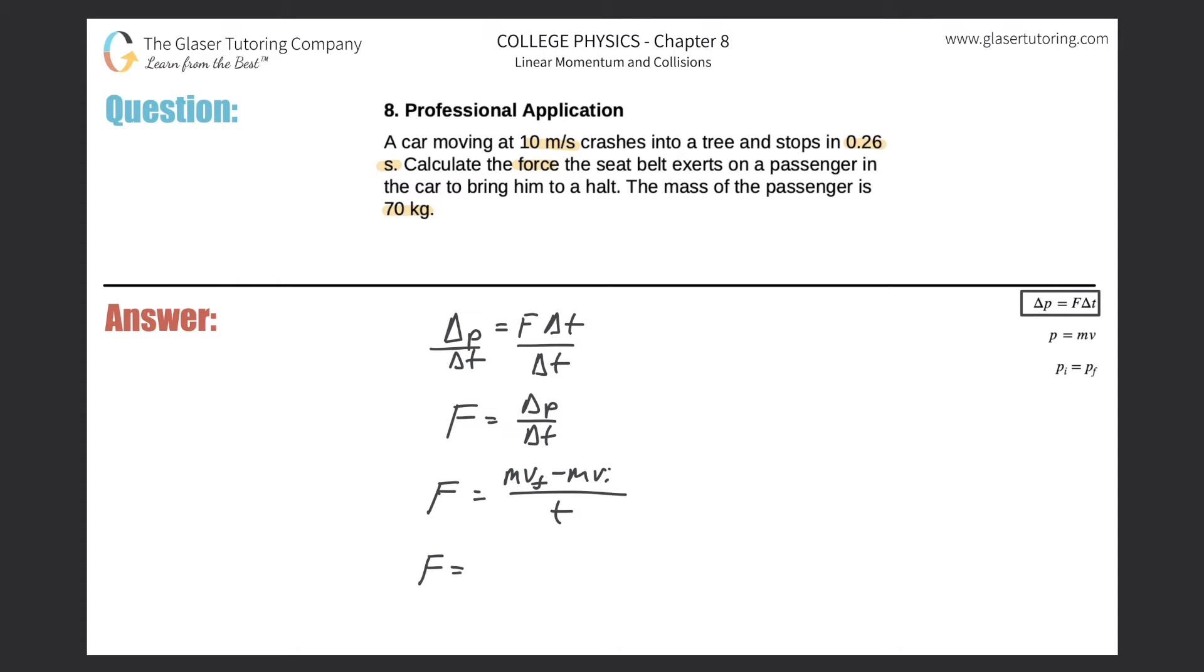Let's just plug everything in. Actually, you know what, I can simplify this thing a little more. I can bring out the mass term. So the force is equal to the mass multiplied by the final velocity minus the initial velocity over the time.